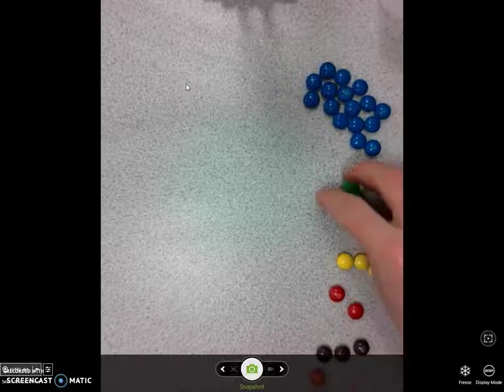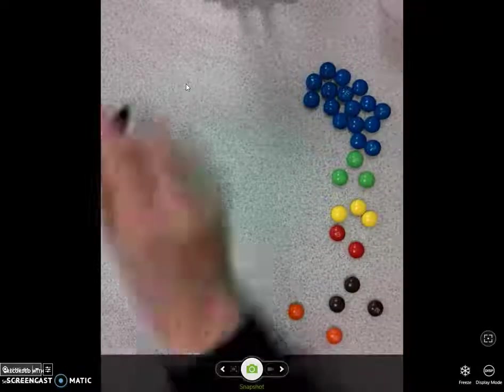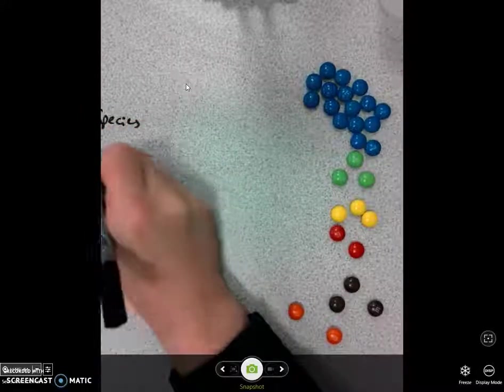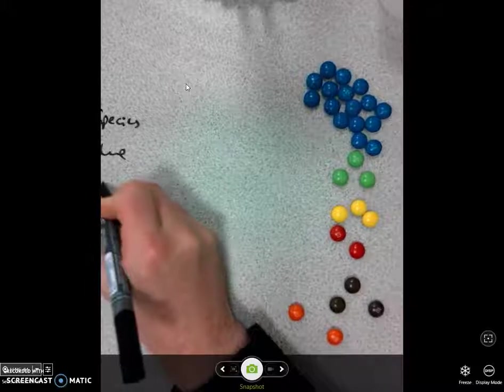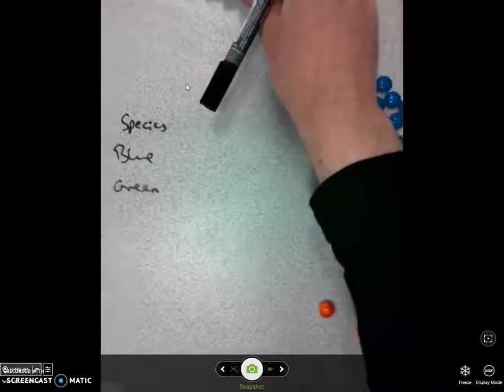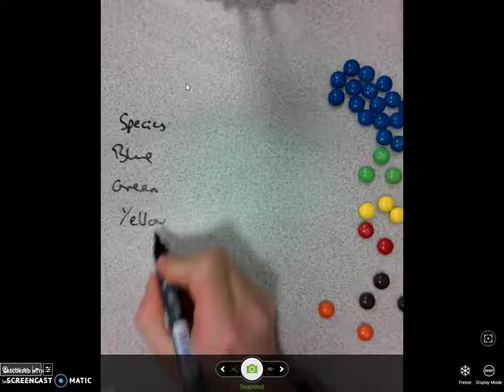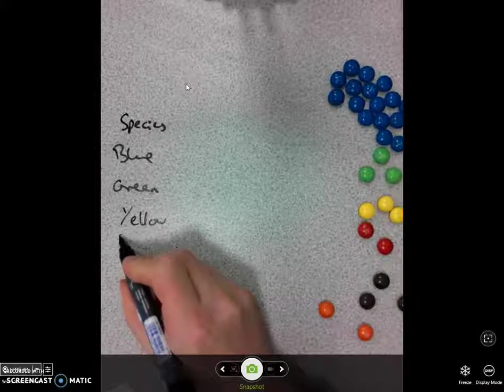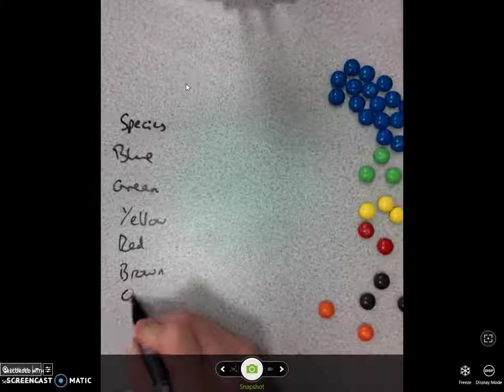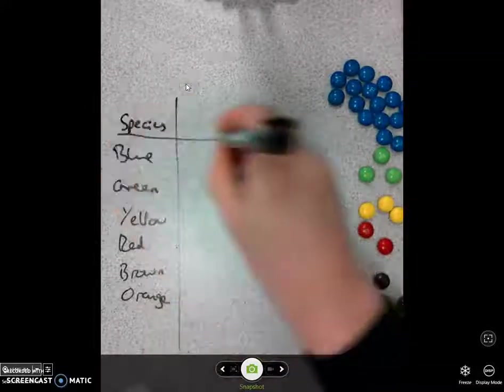Okay, so let's put this in a table, shall we? We've got species over here. We've got blue, green, move that way so you can see my data table. So we've got blue, we've got green, we've got yellow, we have red, we have brown, and orange, and the number that I have found is as follows.